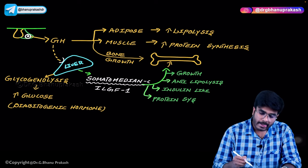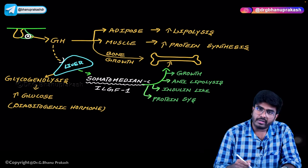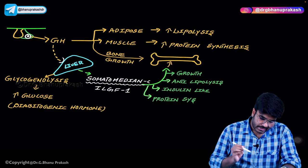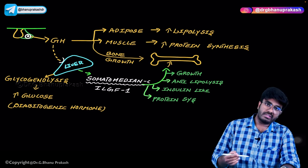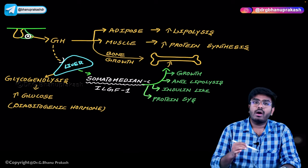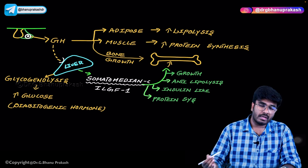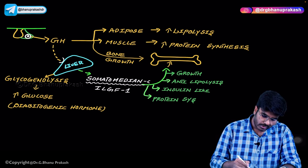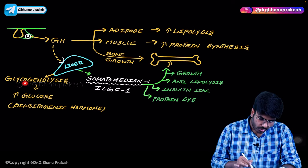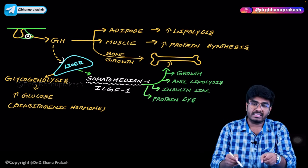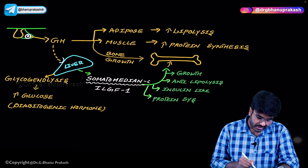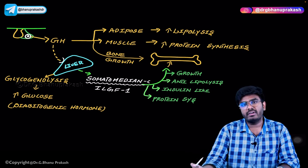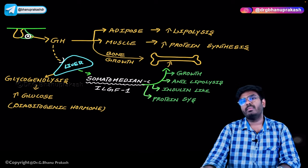Growth hormone receptors are also present on the liver. When growth hormone acts on the liver, glycogenolysis occurs — glycogen (the stored form of glucose) is broken down and releases glucose into the blood, thus increasing blood glucose levels. So growth hormone increases blood glucose by acting on the liver and causing glycogenolysis.